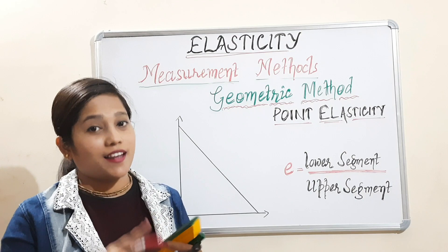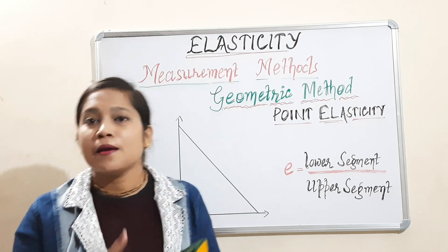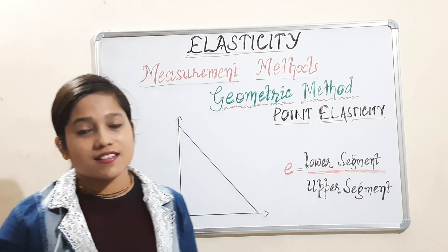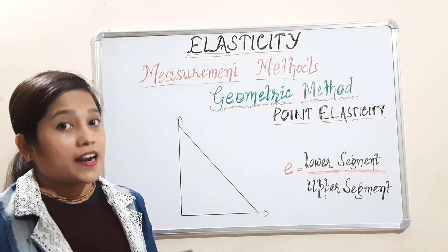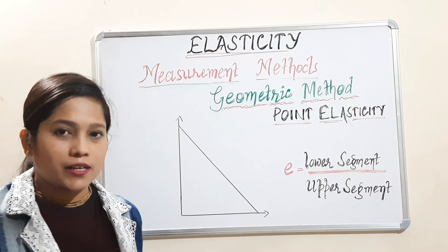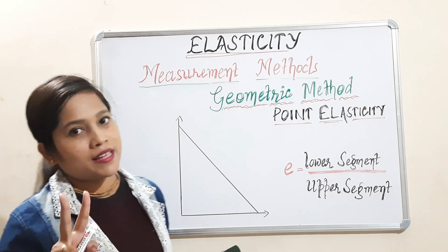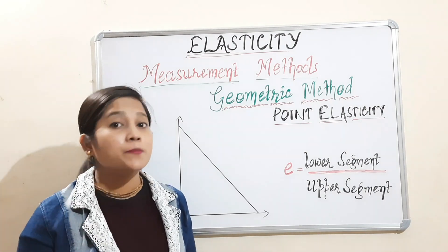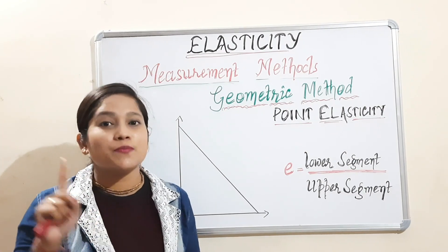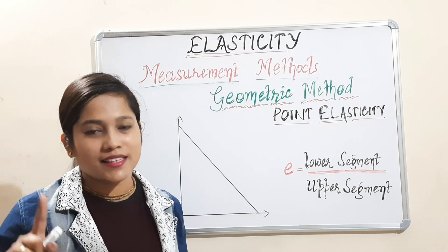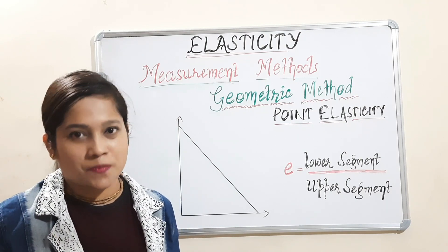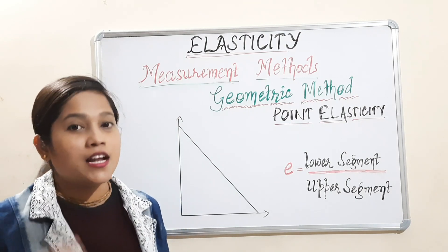So, we have done with elasticity, measurement methods, degree of elasticity, and among the measurement methods, we have completed two methods: the first one is the percentage method and the second one is the total expenditure method.